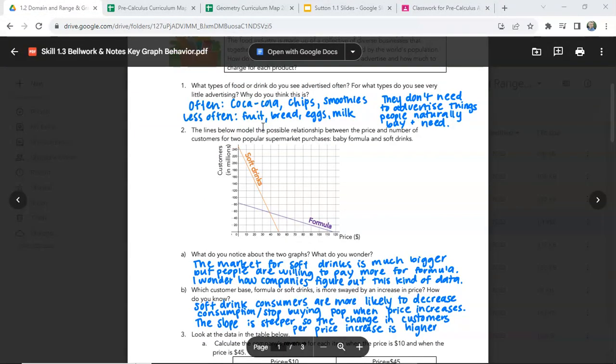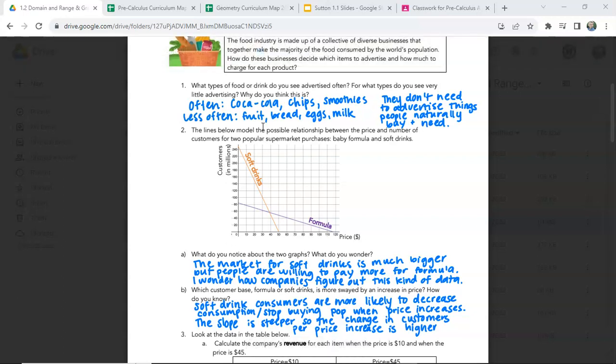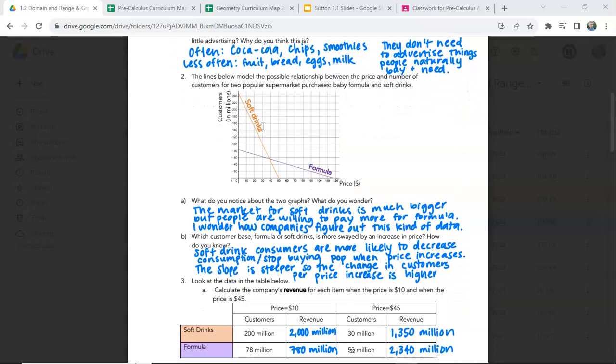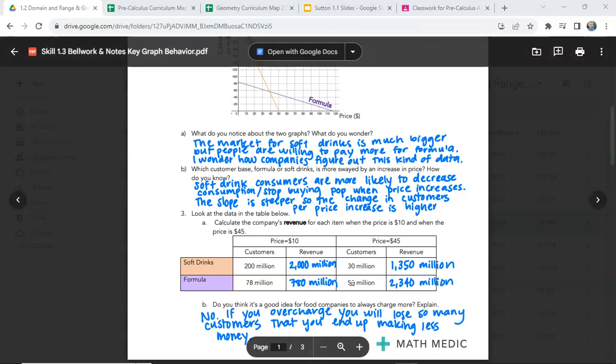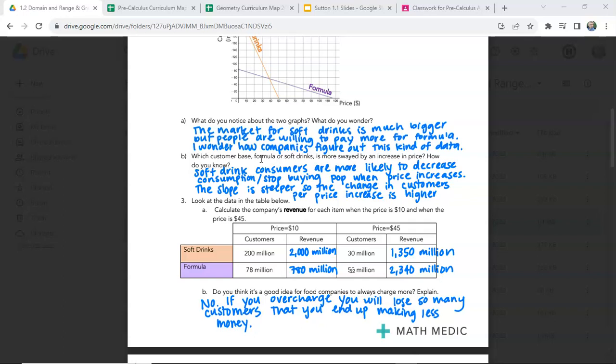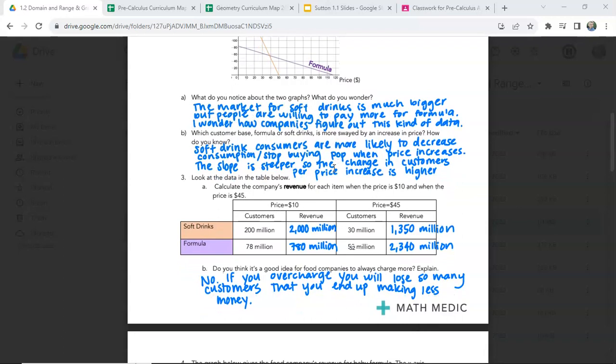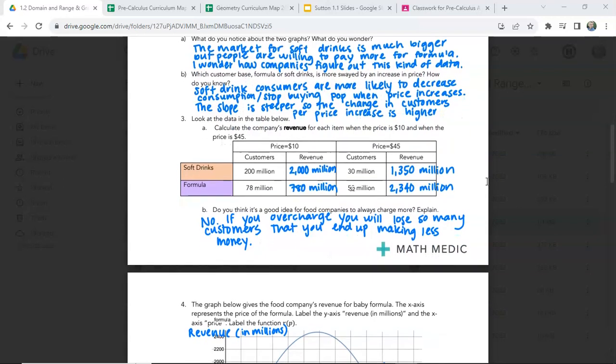All right. So what types of food and drinks do you see advertised often? Different things you could say there. What types of things do you see very little advertising for? Why do you think that is? What do you notice about the two graphs? And what do you wonder? The market for soft drinks is much bigger, but people are willing to pay more for formula. I wonder how companies figure out this kind of data. Which customer base, formula or soft drinks, is more swayed by the increase in price? How do you know? So if soft drinks started getting more expensive, you'd be less likely to drink it. But formula is more crucial, obviously, for baby's health. So increasing formula price, the parents are still going to buy that for their baby, right? Most likely.